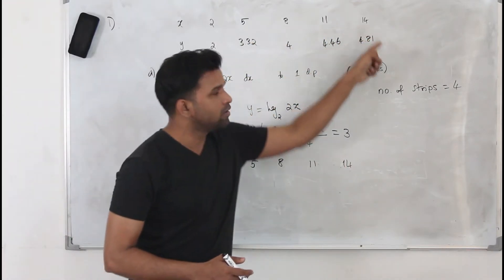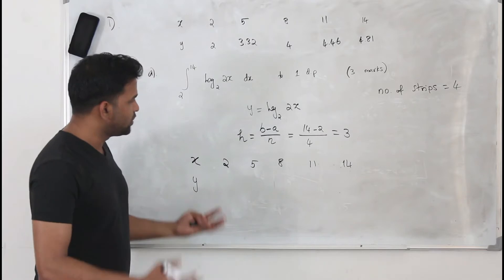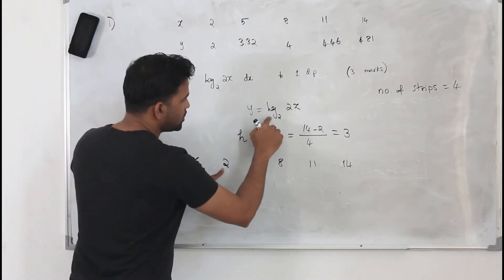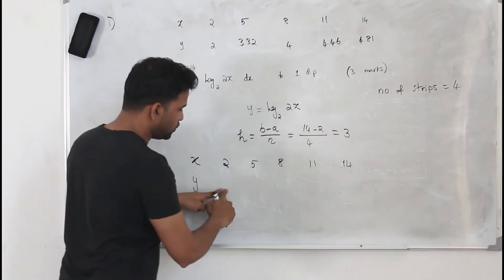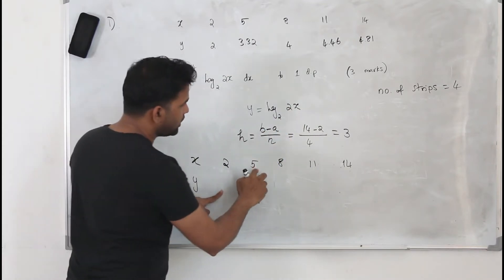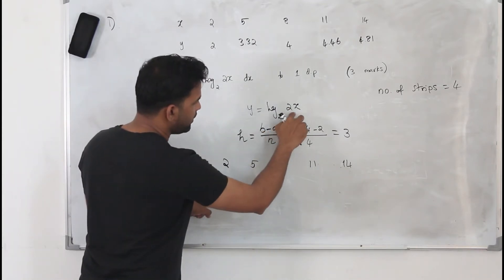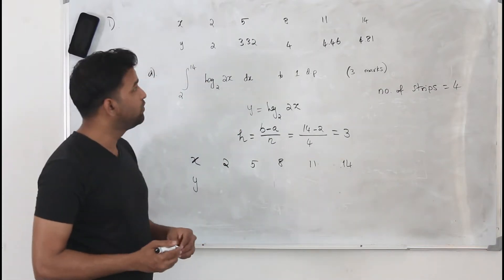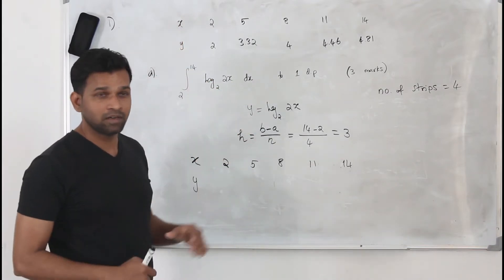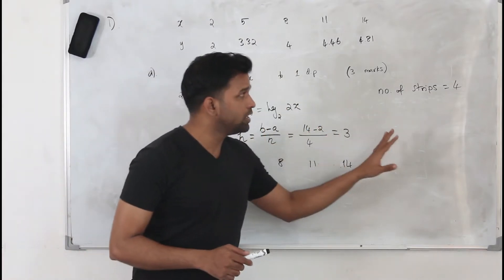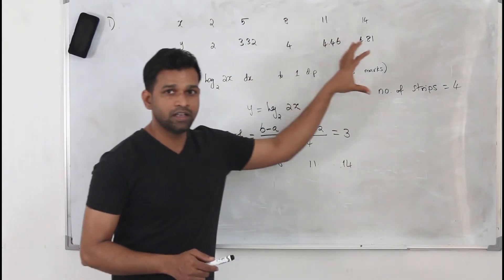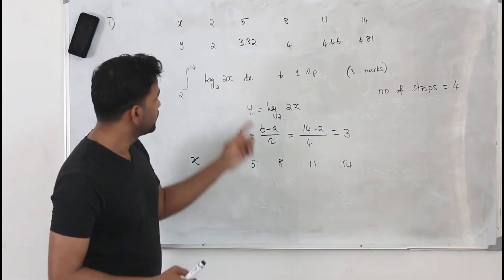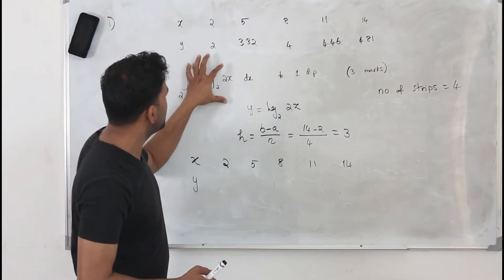Then find y-values using your calculator: substitute each x-value into log₂(2x). For example, log₂(4), log₂(10), and so on — write your y-values in the table. But in this question you don't need to do all this because you are already given a table. You just substitute the values into the trapezium rule to get the value of this integral.